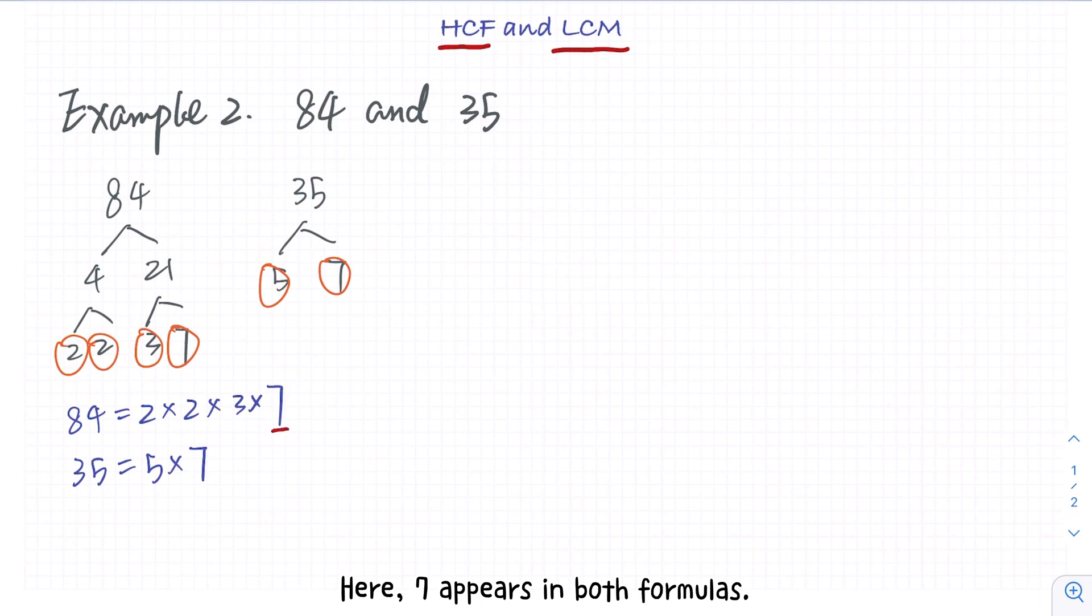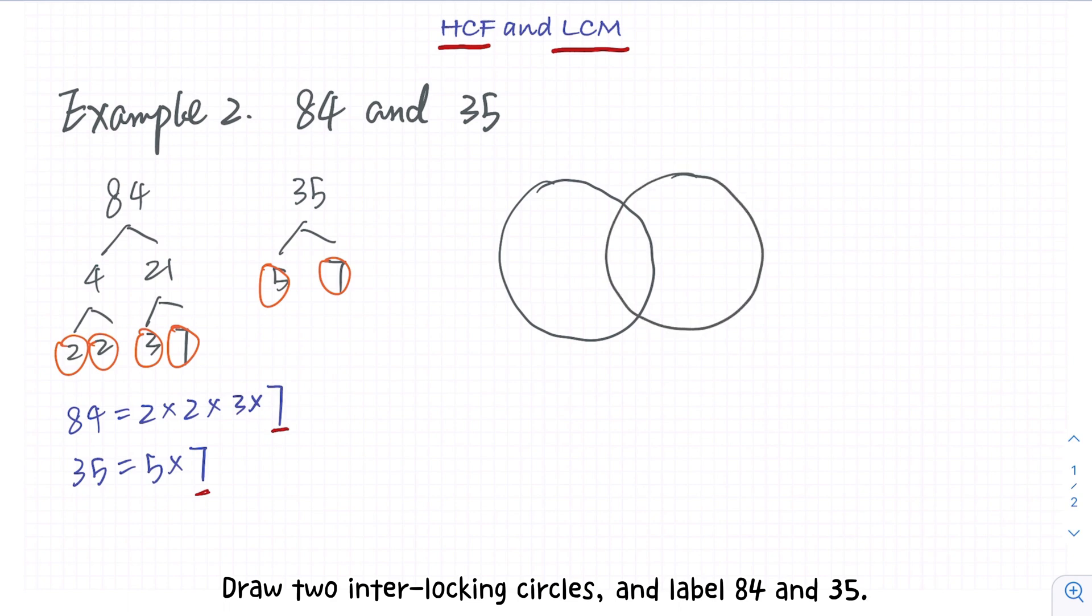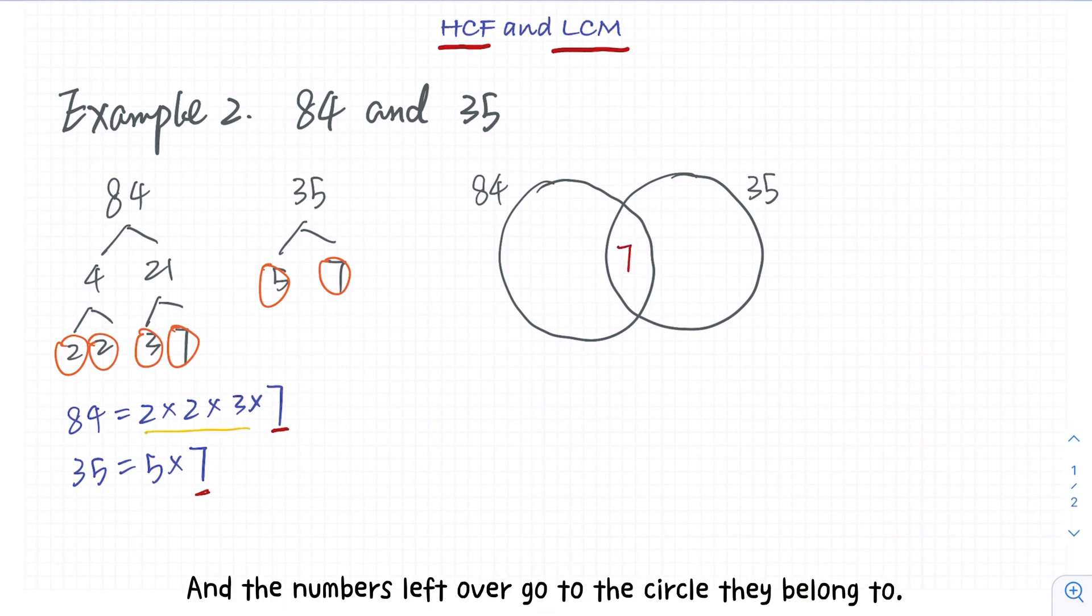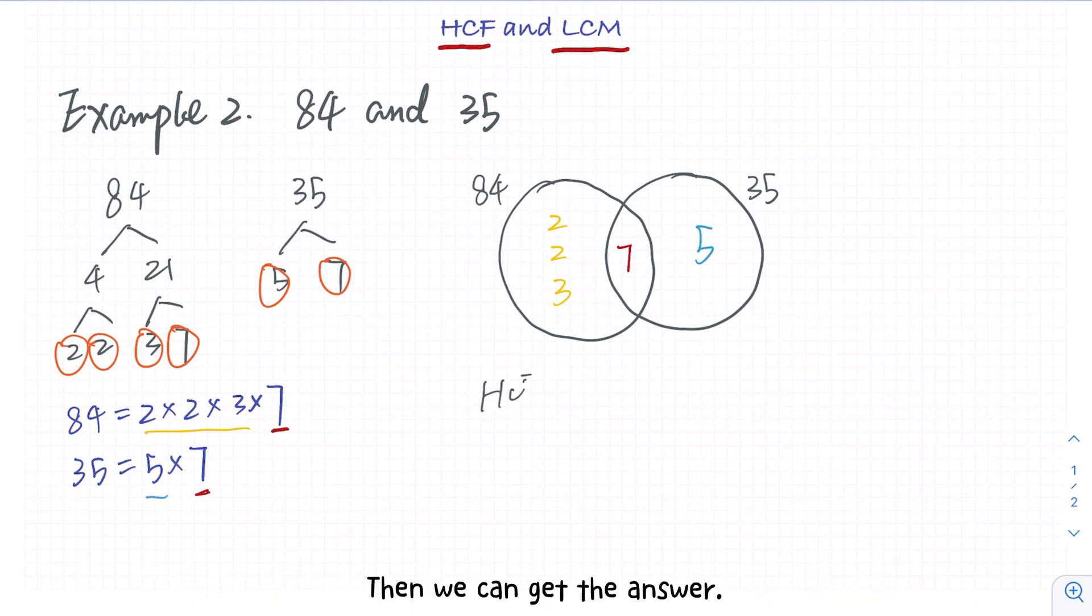Here, 7 appears in both formulas. Draw two interlocking circles and label 84 and 35. Put 7 in the middle and the numbers left over go to the circle they belong to. Then we can get the answer.